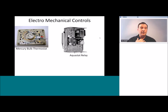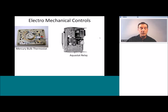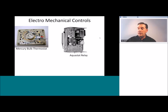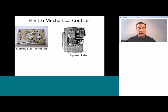The aquastat relay boiler control is another common electromechanical example. Here I've got a temperature sensitive element, just like our water heater control, but now instead of physically opening and closing a gas valve, it opens and closes a set of electrical contacts, which will then power open or power close a gas control.